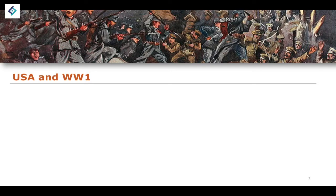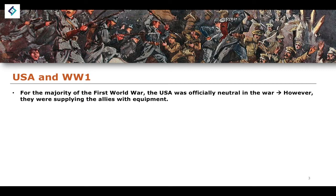Let's first begin with the USA and its intervention in the conflict. For the majority of the First World War, it was the official position of the United States that neutrality be the leading factor — they'd be a neutral state. However, they were supplying the Allies with equipment, so despite being quote-unquote neutral, they were still supporting the Allied side through non-militaristic means.